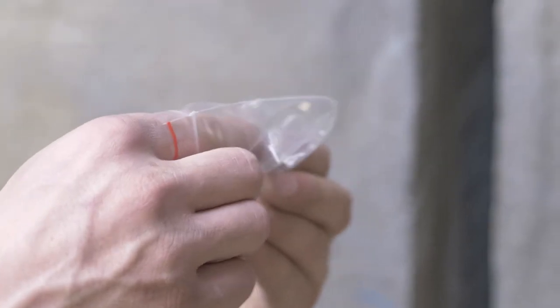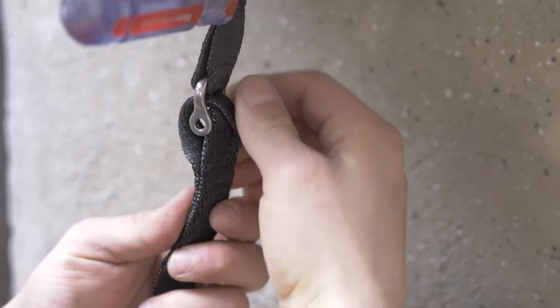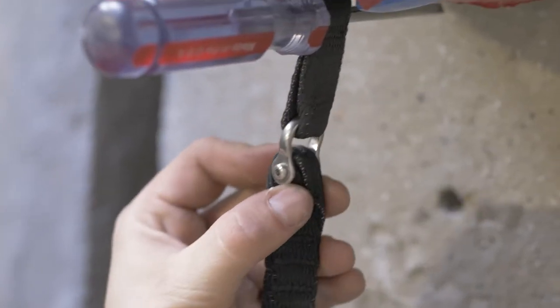Fit the loop of the new webbing in the shackle and make sure the shackle loop is fitted to the webbing loop. Attach the new pin and use your allen key to hand tighten.